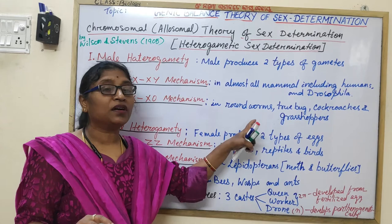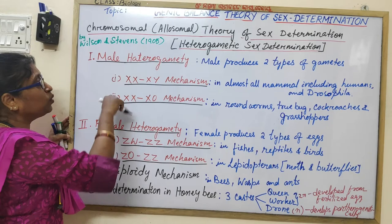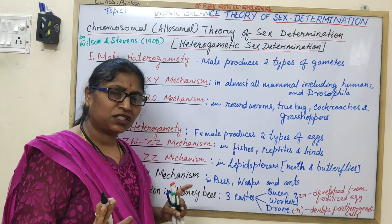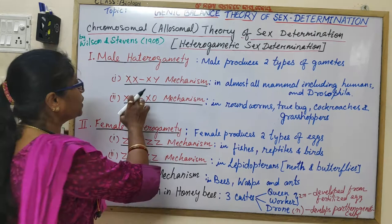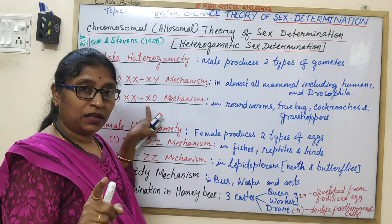In both these mechanisms, males produce two types of gametes — that is what male heterogamity means. In the XY mechanism, males have two heteromorphic sex chromosomes, X and Y. But in the XO mechanism, males have only one sex chromosome; the Y sex chromosome is lacking.